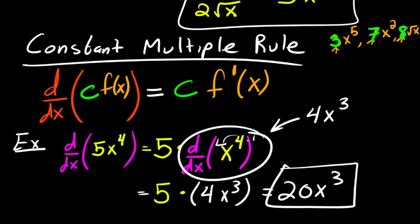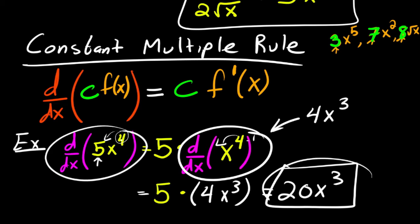A simpler way of looking at this: you don't have to do all those steps. Remember, this only works if this is a constant — it doesn't work with the product of two functions; we have a different situation for that later. Notice that if you just use the power rule, you bring down the four and multiply it times the five to get 20, then subtract one. So you can jump from the first step all the way to the answer as you get better.